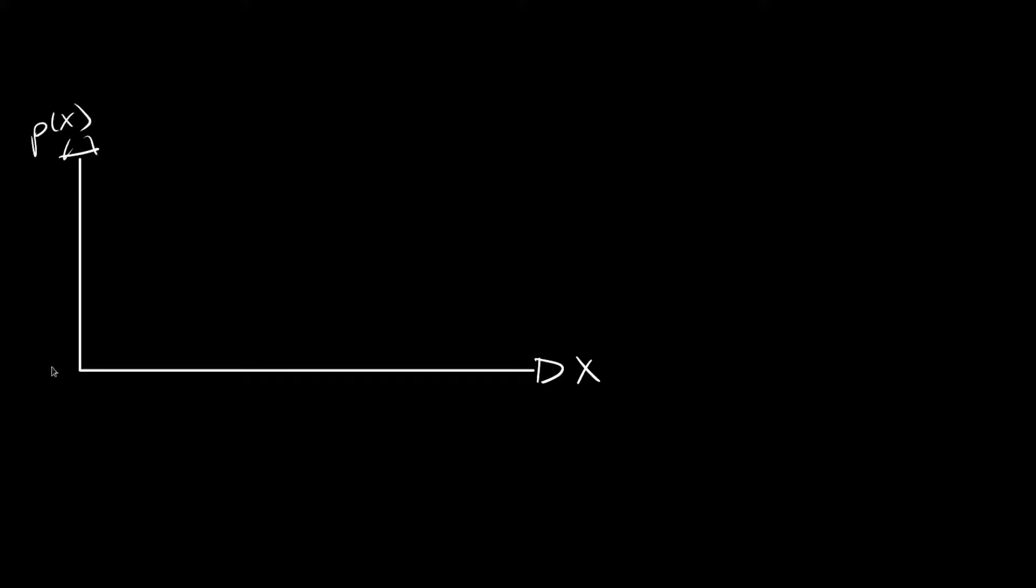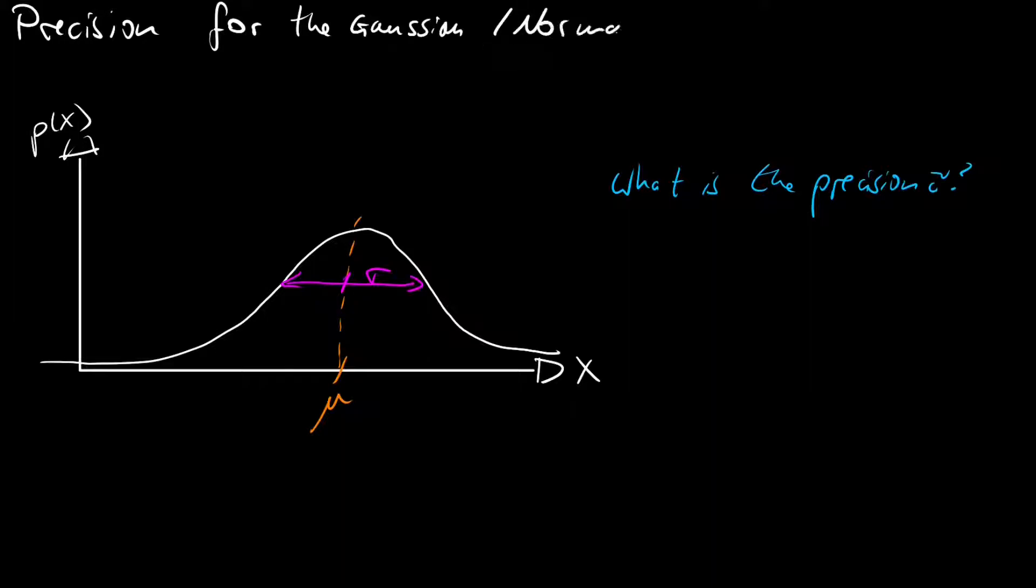You have a univariate normal distribution, a random variable x with the typical bell shape that is given by the mu and the standard deviation sigma. Now someone introduced the precision tau. Welcome to this video where we will look at what the precision means for the normal distribution.